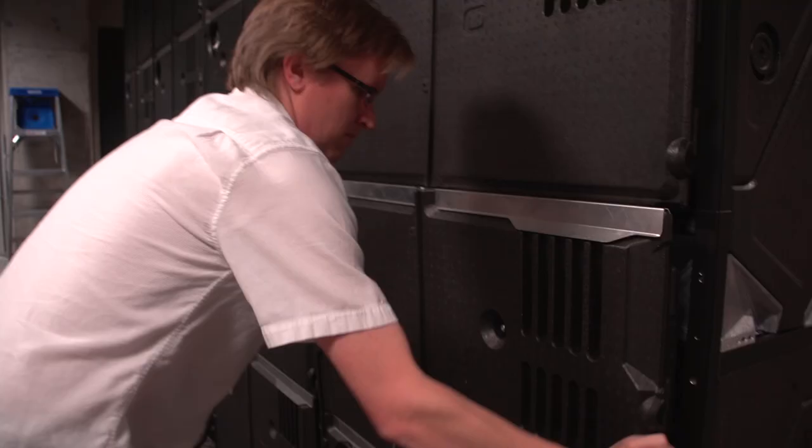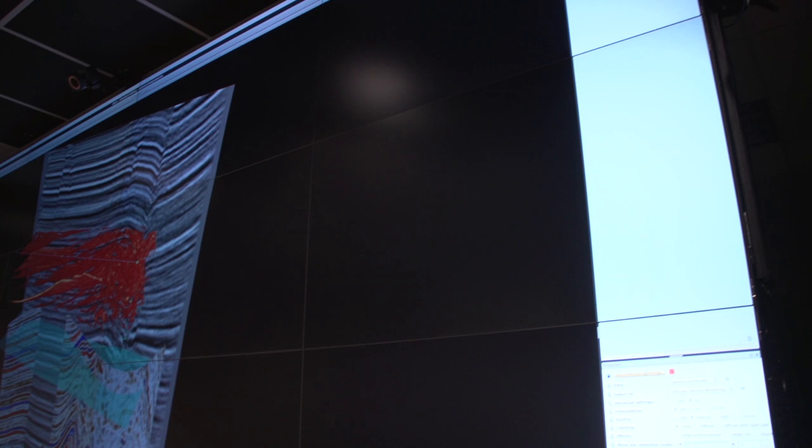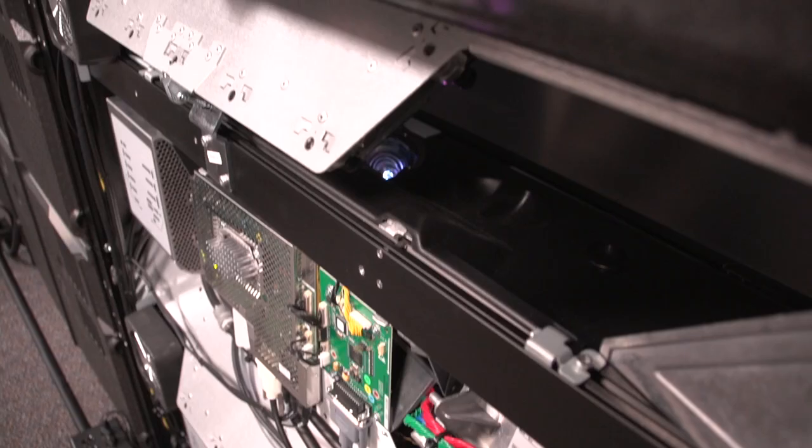The visualization wall is a reasonably unique piece of equipment, very high resolution. As you can see, it's made up of 16 screens. Each one of those is equivalent to a regular HD display. So in total, we're looking at about 32 megapixels of resolution.